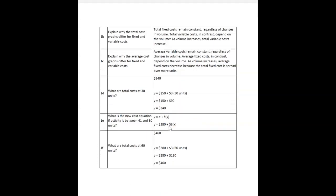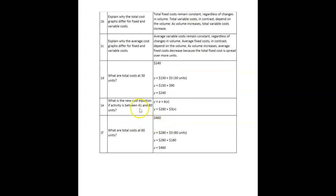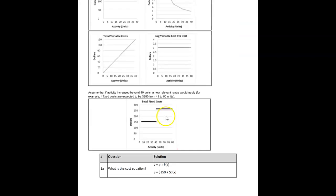And if the equation goes up to between 41 and 80 units, then we've got the new fixed cost here. It goes from 150 to 280. It's this number right there. There's 280. That's our new fixed cost.